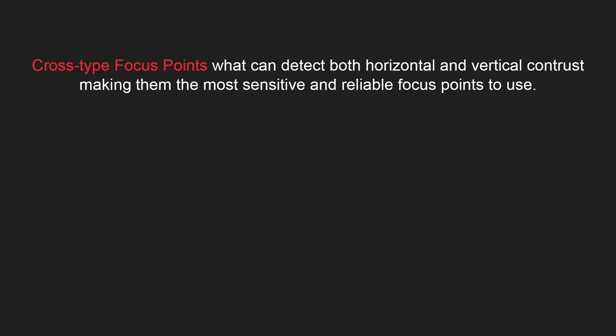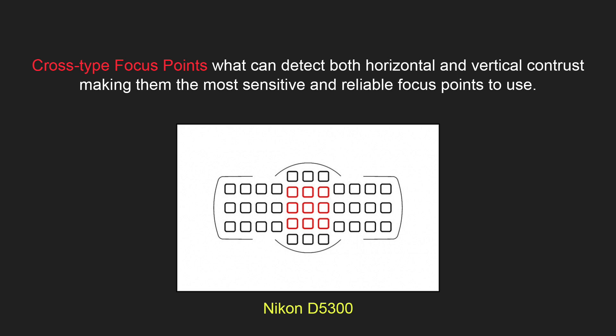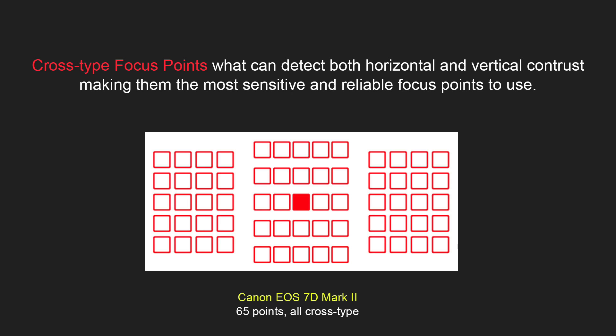But all focus points are not made equal. In order to autofocus, the camera is looking for contrast in a scene. Basic autofocus points can only detect horizontal or vertical contrast, but not both. However, there are cross-type focus points which can detect both horizontal and vertical contrast, making them the most sensitive and reliable focus points to use. Different cameras have different numbers and positions of cross-type focus points. For example, the Nikon D5300 has 9 cross-type focus points and they are all in the middle, which is not very helpful. On the other hand, in the Canon EOS 7D Mark II, all 65 focus points are cross-type, which is awesome.